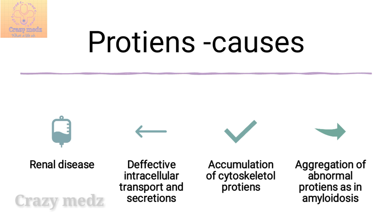Defective intracellular transport is most commonly seen in enzyme deficiency. There are several types of cytoskeletal proteins including microtubules, thin actin filaments, thick myosin filaments, and intermediate filaments which include keratin, neurofilaments, vimentin, and glial filaments. Intracellular accumulation of proteins usually appears as rounded eosinophilic droplets, vacuoles, or aggregates in the cytoplasm.